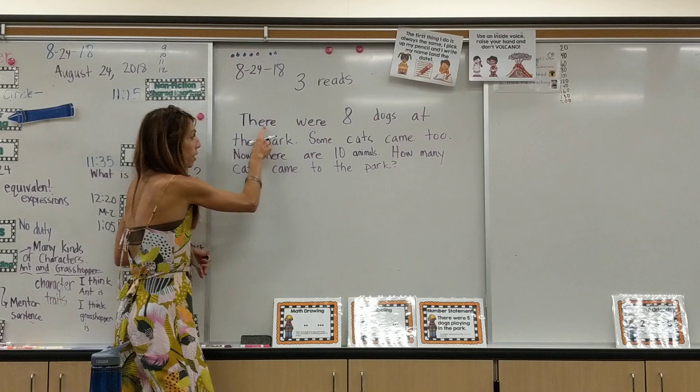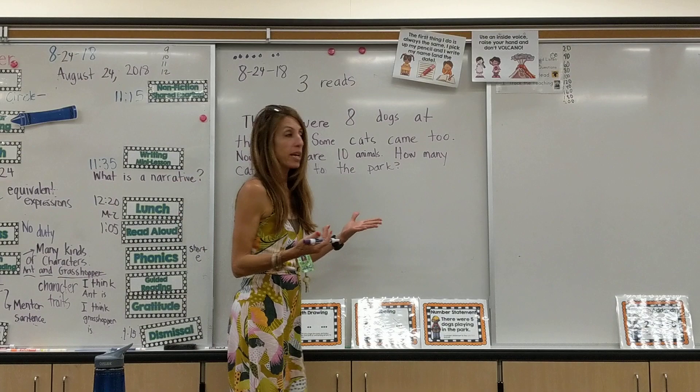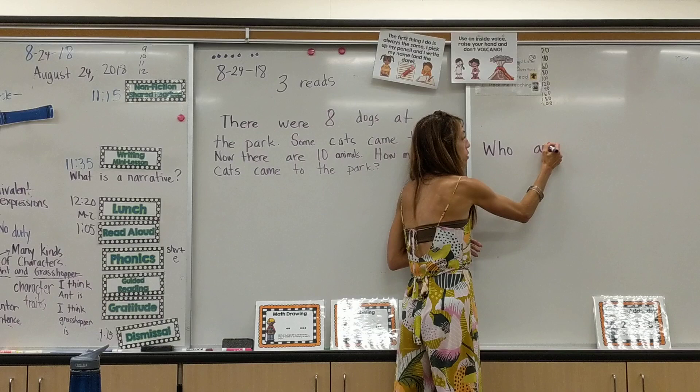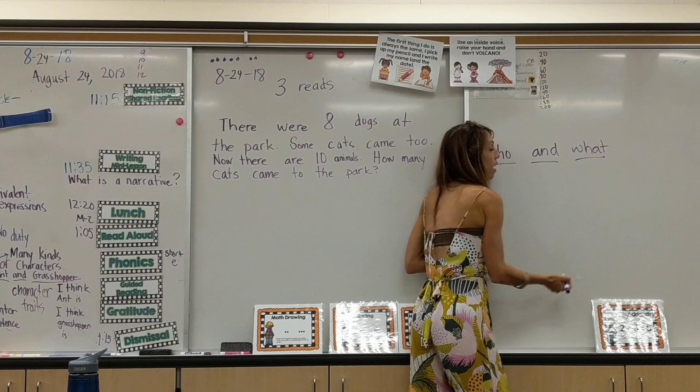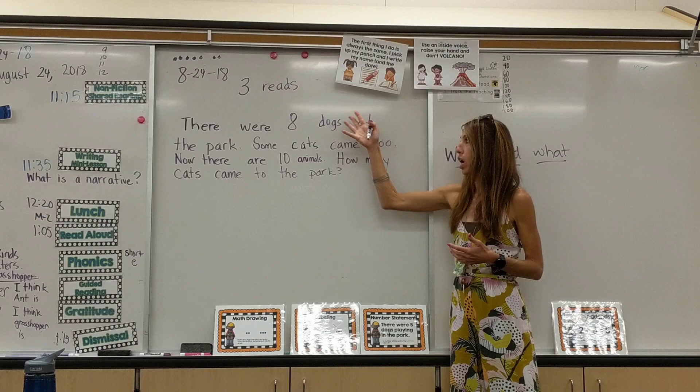So the first read: 'There were eight dogs at the park. Some cats came too. Now there are ten animals. How many cats came to the park?' The first question we ask the kids is who and what the problem is about. When you are doing homework with your child, the first read — ask them who and what, and hopefully they'll say it's about dogs and cats at the park.